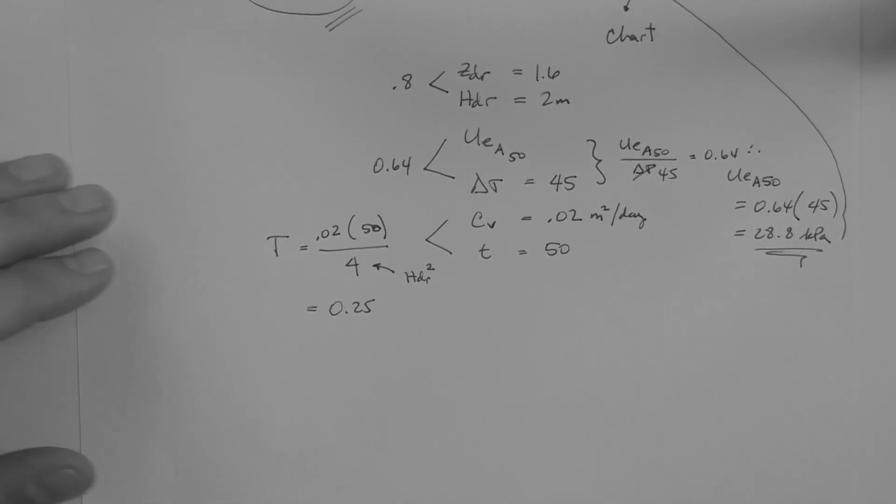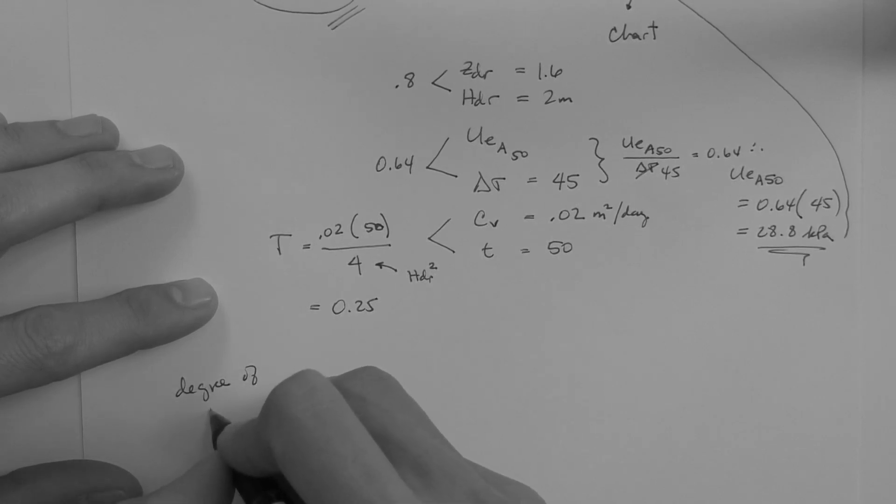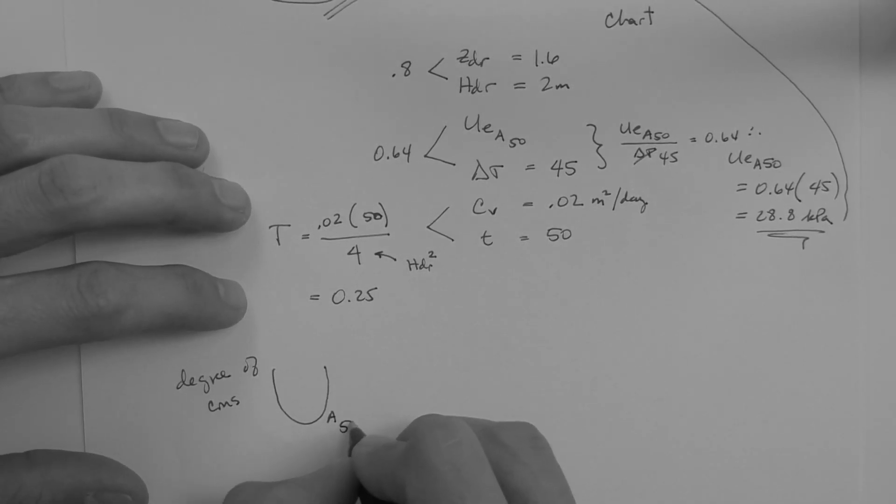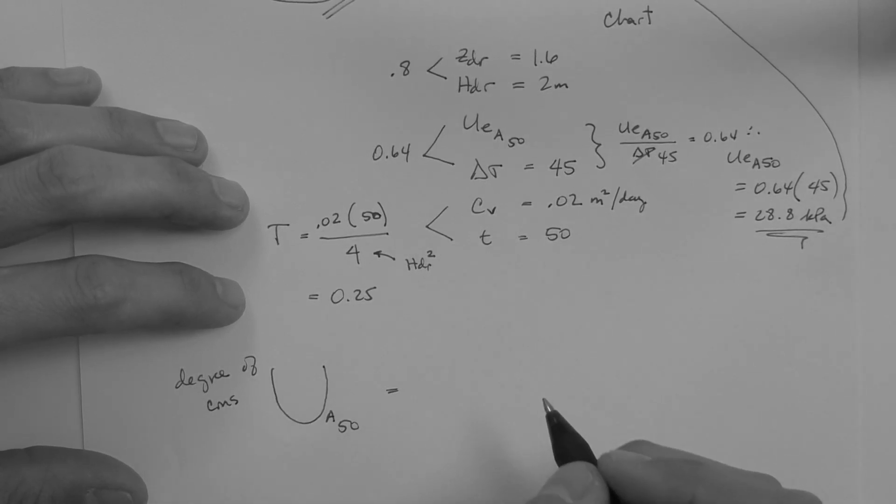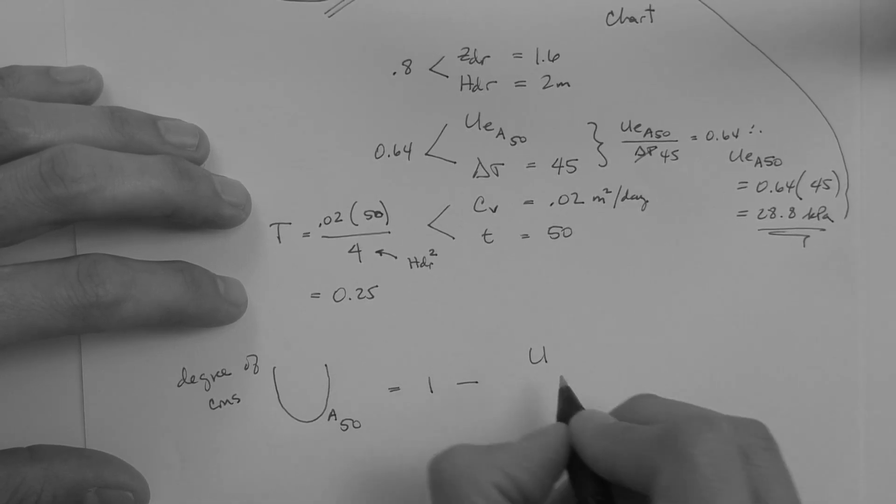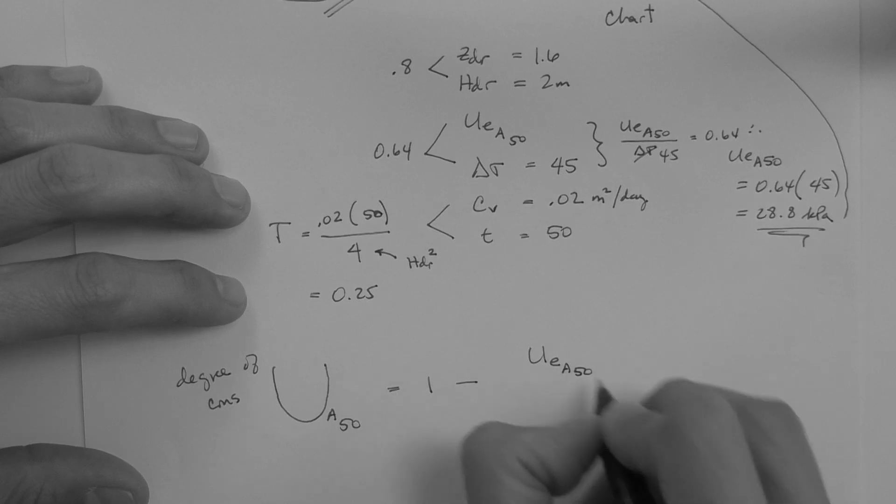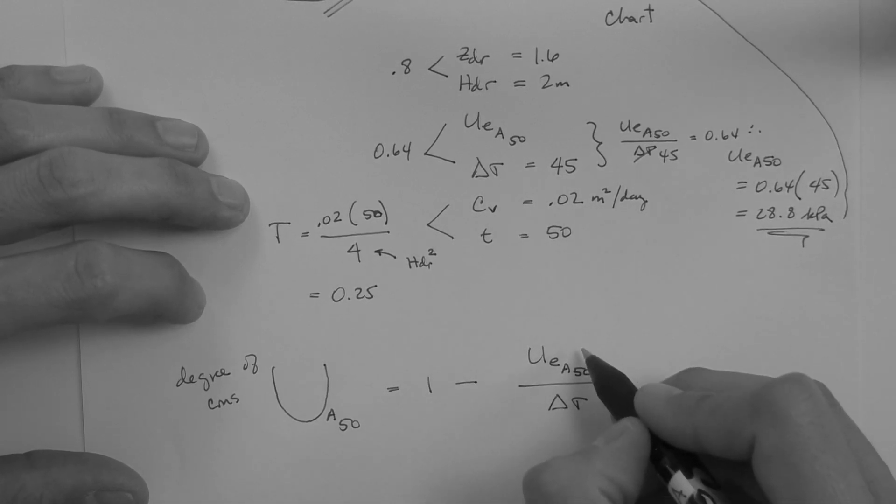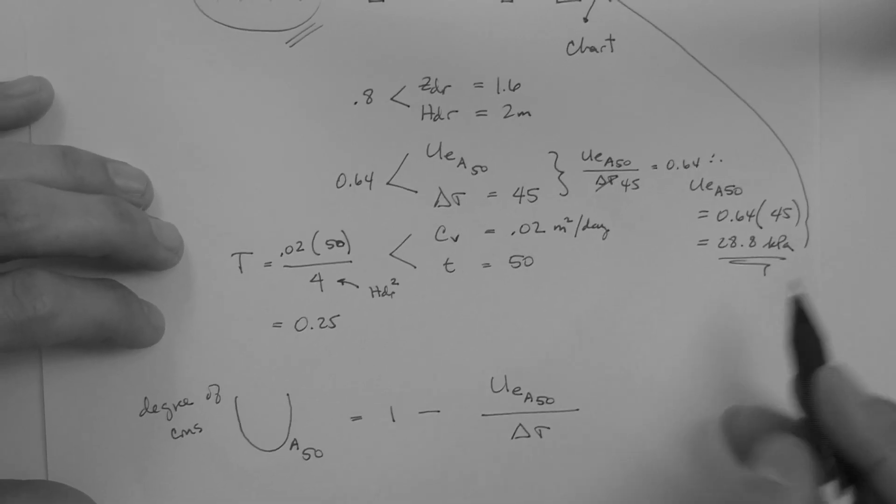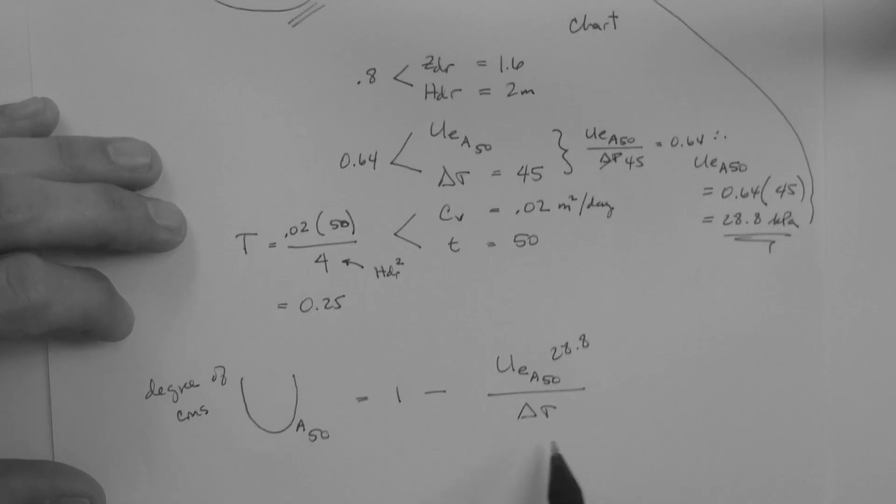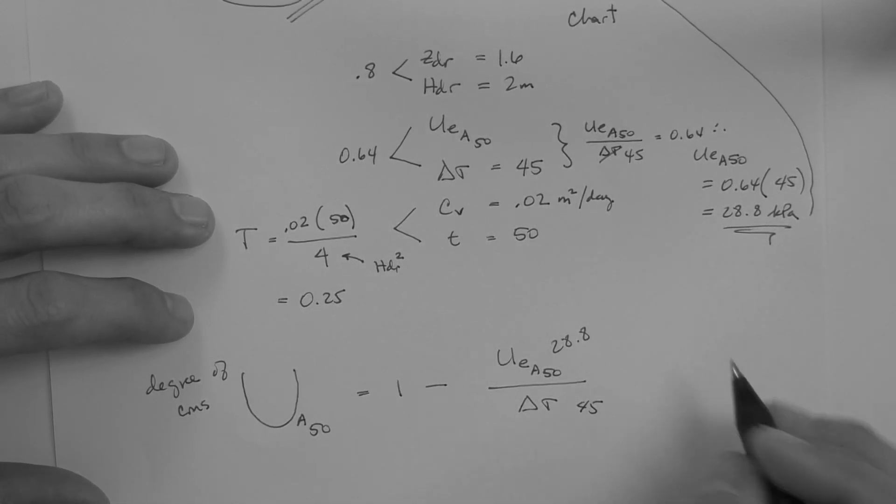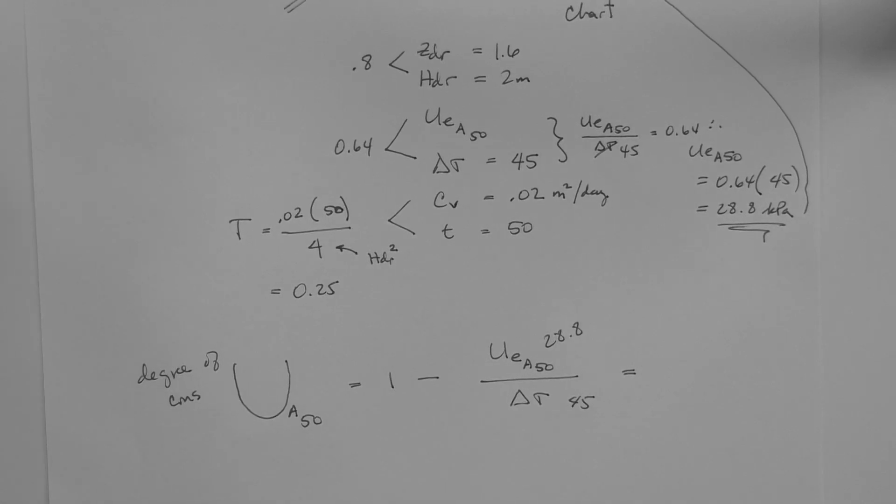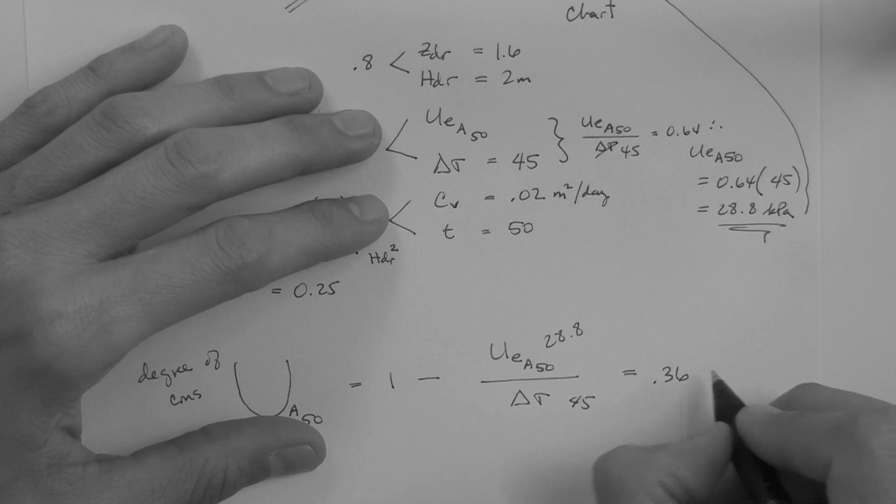We can also ask, for example, what is the degree of consolidation, U, capital U, at point A, at time equal to 50 days, after fill placement. The equation for this is 1 minus the excess pore pressure at point A, at time equal to 50 days, divided by delta sigma, which is the load. So, this value, we calculate it to be 28.8 kPa, this value is the load, which is 3 times 15, which is 45, and, therefore, the degree of consolidation at point A, at 50 days after fill placement, is 0.36, which is 36%.